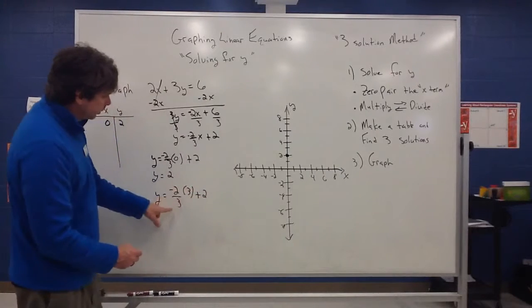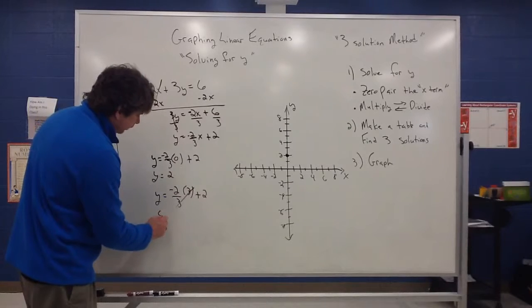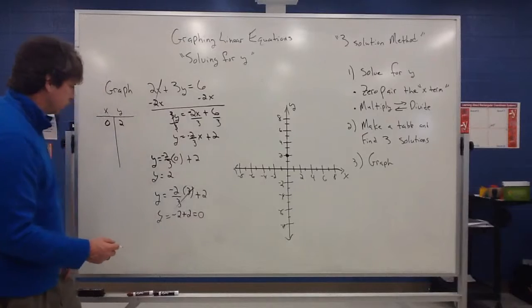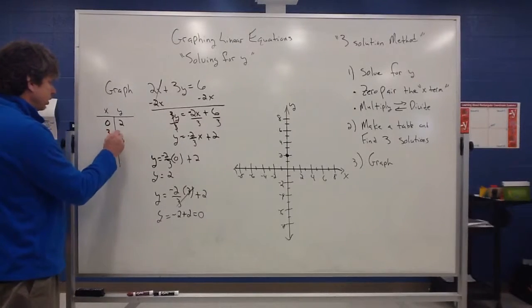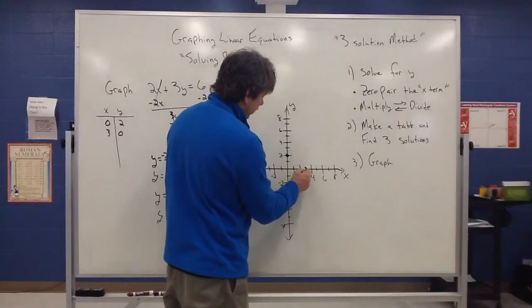And we do know that three is going to go into three. It's going to divide out. That's going to give me a negative two plus two, which is going to give me a zero. So if x equals three, y is equal to zero. So three, zero would be located at that spot.